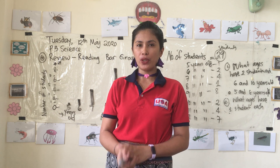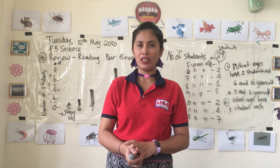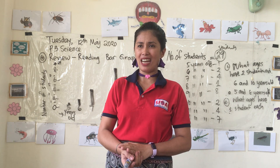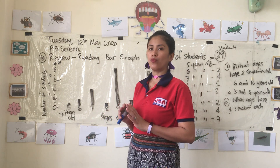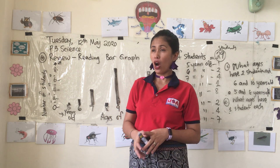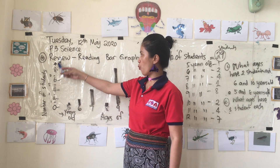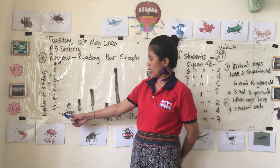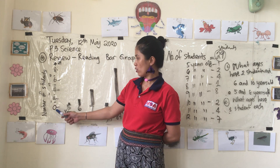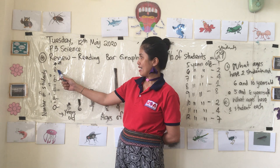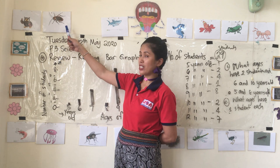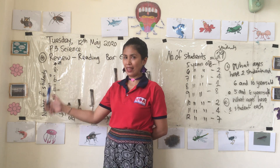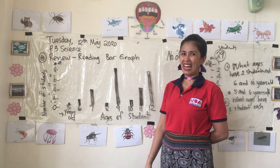We will be reading a bar graph. A bar graph shows collected information — today it's about students' ages. There are 29 students. On the axis you'll see an interval: zero, two, four, six, eight, and up until 29. Since there's no space I just did it like that.